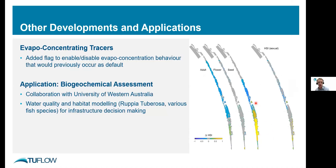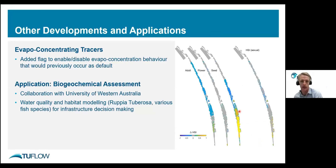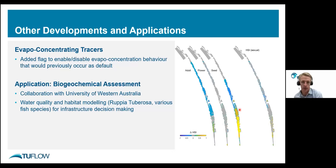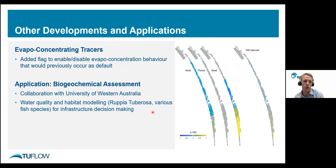Sheet map plots of Ruppia tuberosa through different life cycle phases — adult, flower, and seeding — show spatial distributions more conducive (yellow) and less conducive (blue) to a particular infrastructure scenario relative to a baseline condition. We can see improvement of the seeding phase in certain areas but also a reduction in the North Lagoon. This tool can also be applied to different habitats, such as fish species, to assess what environments are most conducive to various flora and fauna.